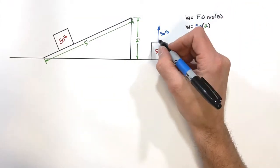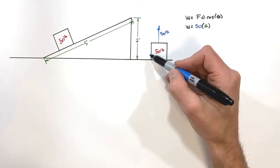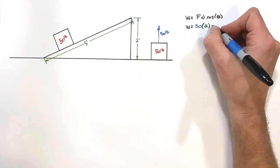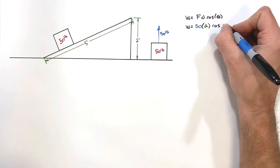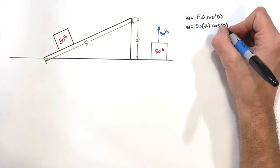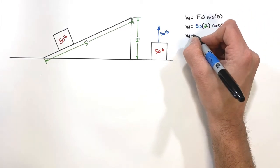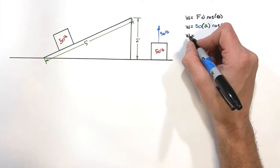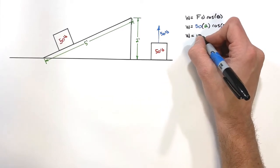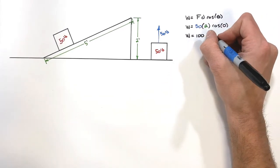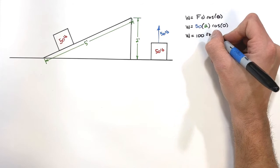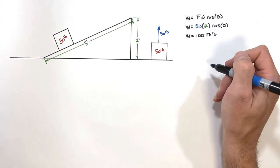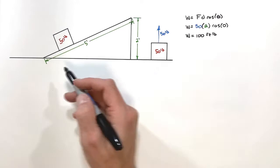The displacement is straight upward and the force is straight upward, so the angle between them is zero. The cosine of zero is one, giving us a work of 100 foot-pounds — foot-pounds being the units of work in this problem.